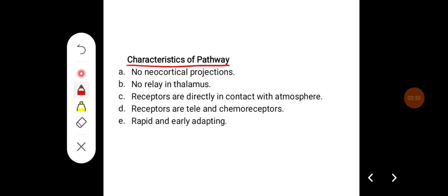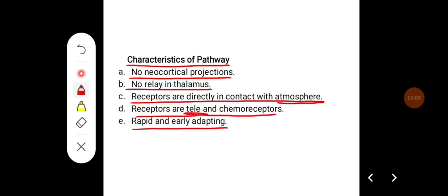The characteristics of olfactory pathway are there are no neocortical projection, there is no relay in thalamus, receptors are directly in contact with atmosphere and receptors are tele- and chemoreceptors. They are rapid and early adapted.